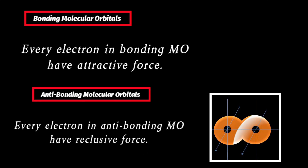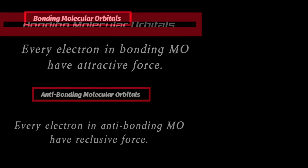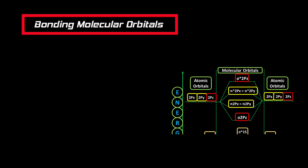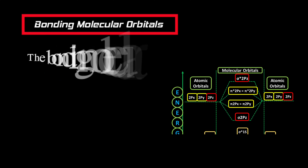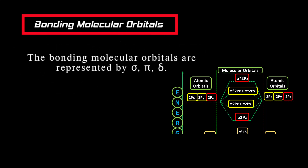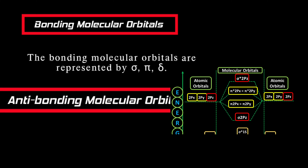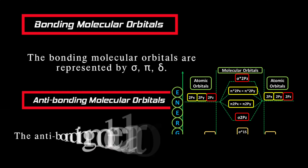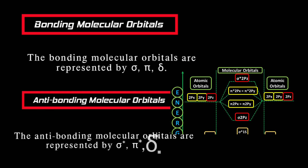Let us consider the sixth difference. Generally, bonding molecular orbitals are represented by sigma (σ), pi (π), or delta (δ), while anti-bonding molecular orbitals are represented by sigma star (σ*), pi star (π*), and delta star (δ*).